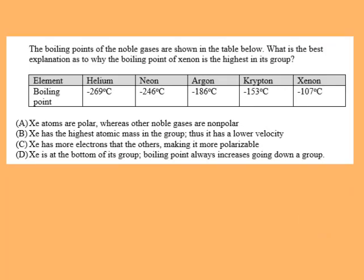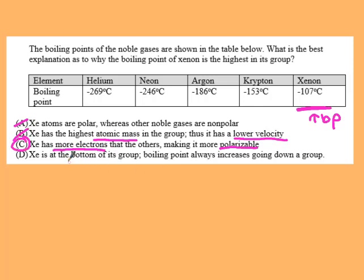For why xenon has the highest boiling point among noble gases: they're all nonpolar group 8A, so A can't be right. Atomic mass and velocity aren't the reason either. Xenon has more electrons and if it has more electrons it's going to be more polarizable. Answer D just makes a statement that it's true but isn't explaining why the boiling point is the greatest.